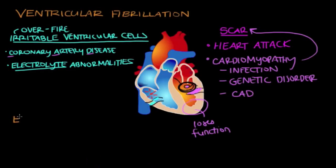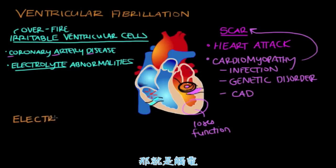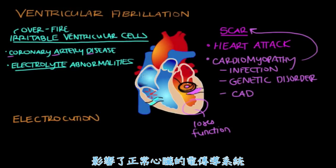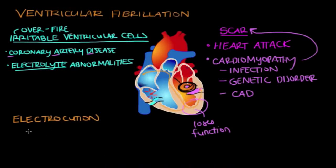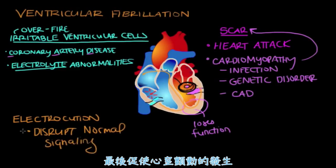One final cause of ventricular fibrillation that's less common is electrocution. In electrocution, an outside source of electricity enters the body, disrupting the heart's normal electrical conduction system, and that can lead to ventricular fibrillation.